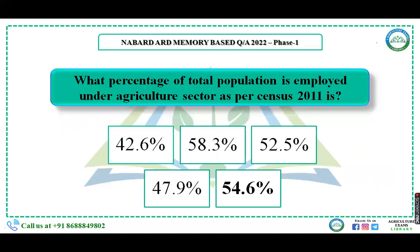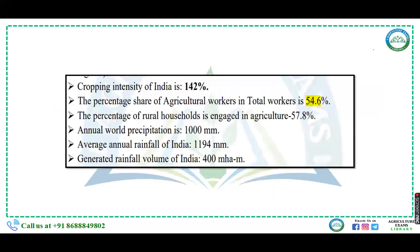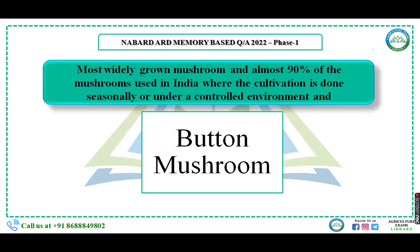What percentage of the total population is employed under the agriculture sector as per Census 2011? As per Census 2011, 54.6 percent are engaged in agriculture. The percentage of agriculture workers in the total workforce is 54.6 percent.